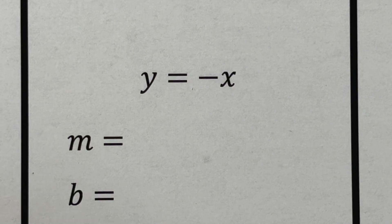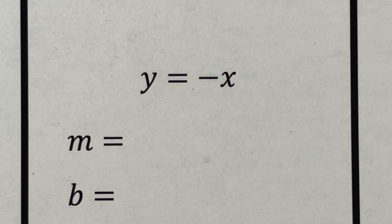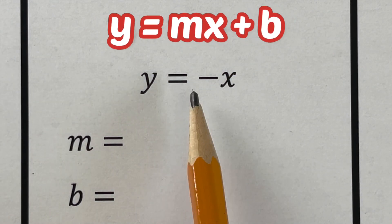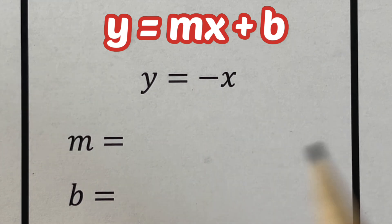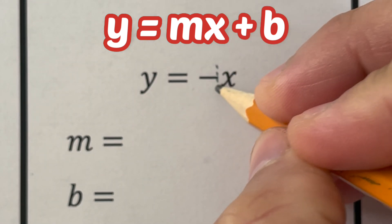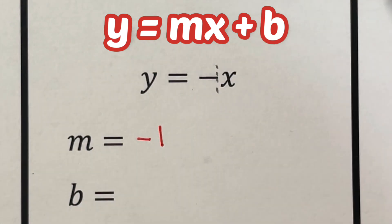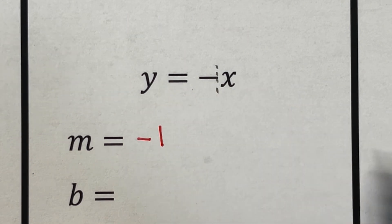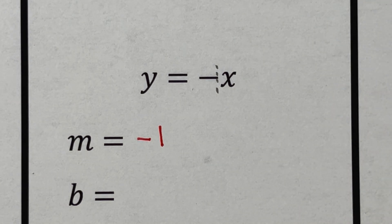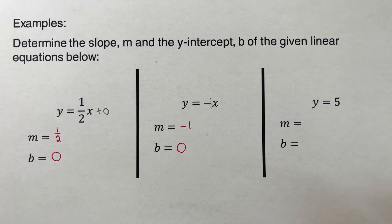The fifth problem is y = -x. In the form y = mx + b, there is no number in front of x, so that is an invisible 1, making m equal to negative 1. And since there is no b value, that is not an invisible 1 — it is zero. So our y-intercept b is zero.